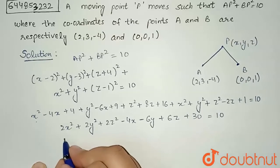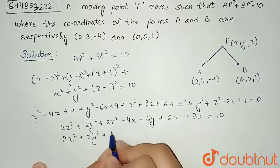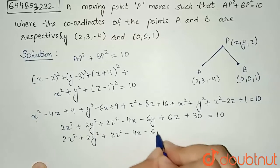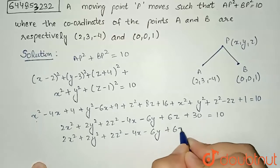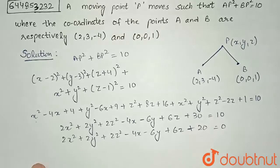I will bring this 10 here. So, I will get 2x² + 2y² + 2z² - 4x - 6y + 6z + 30 - 10 will be 20 = 0.